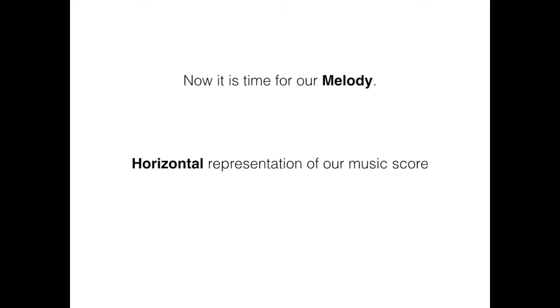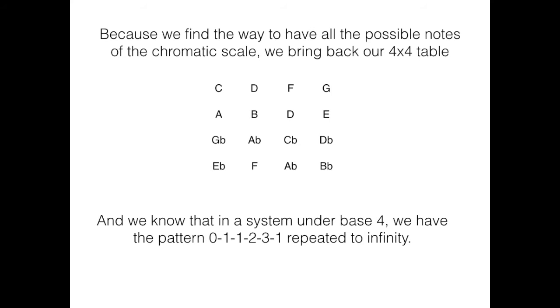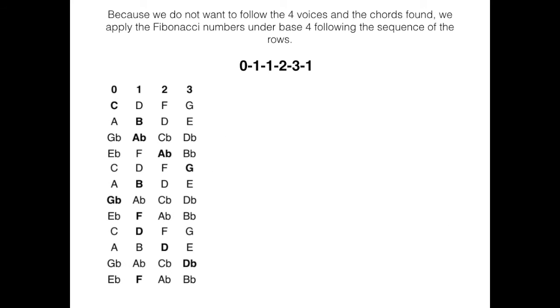Horizontal representation of our music score. Because we find the way to have all the possible notes of the chromatic scale, we bring back our 4x4 table. And we know that in the system under base 4, we have the pattern 0, 1, 1, 2, 3, 1 repeated to infinity. Because we do not want to follow the 4 voices and the chords found, we apply the Fibonacci numbers under base 4 following the sequence of the rows.